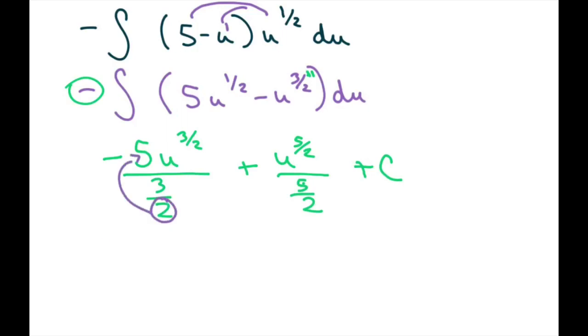And then you simplify. So I'm going to bring this two up here, so that's negative 10 thirds u to the three halves. Flip this around, so this will be plus two fifths u to the five halves plus c.